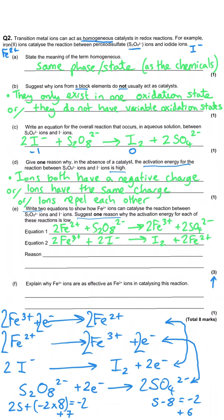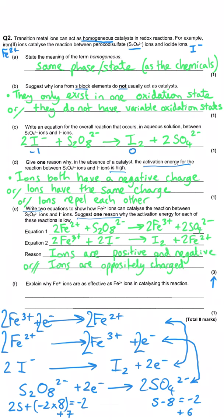The final part asks why the activation energy is low this time. It's basically the opposite of why it was high before: we are now reacting a positive Fe²⁺ with a negative S₂O₈²⁻, and then a positive Fe³⁺ with a negative I⁻. These ions are oppositely charged and therefore attracted to each other, so all we need to say is that we have oppositely charged (positive and negative) ions.